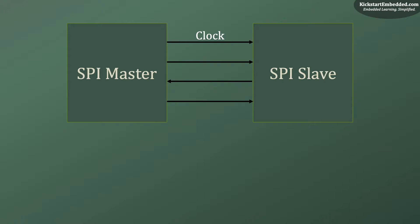The clock is the heartbeat of the communication. The second signal is the MOSI, or master-out-slave-in. This is the line that carries data from the master to the slave. The third connection is the MISO, or master-in-slave-out, which carries data from the slave to the master. The fourth line is the chip select — unless it has been asserted, i.e. pulled low, the slave should not respond to the master. For example, if you have two slaves, only the one whose chip select line has been pulled low shall respond.